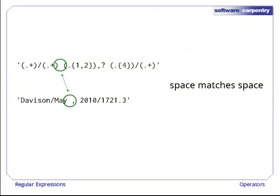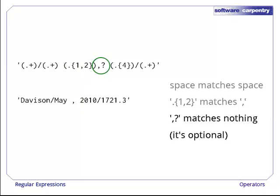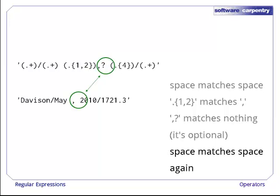Here's what's happening. The space after May matches the space in the pattern. The expression one or two occurrences of any character matches the comma because comma is a character and it's occurring once. The expression comma question mark is then not matched against anything because it's allowed to match zero characters. Question mark means optional, and in this case, the regular expression pattern matcher is deciding not to match it against anything because that's the only way to get the whole pattern to match the whole string. Then the second space matches the second space in our data.